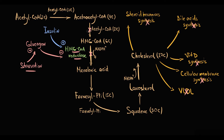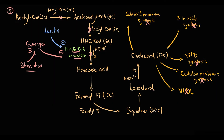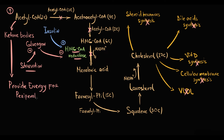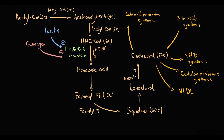Inhibition of HMG-CoA reductase causes accumulation of acetyl-CoA molecules, and liver tissue uses acetyl-CoA for production of ketone bodies that will provide energy for peripheral tissues such as brain tissue. Also, cholesterol allosterically inhibits HMG-CoA reductase — a typical reciprocal regulation.